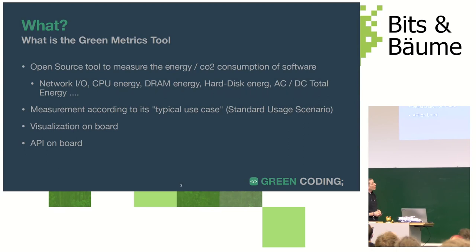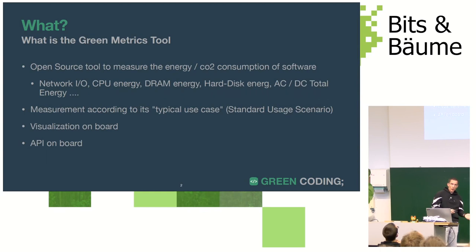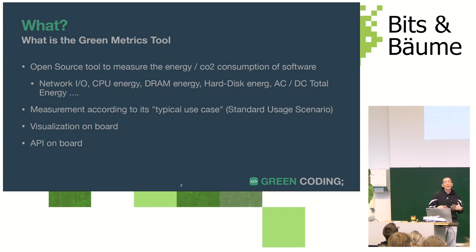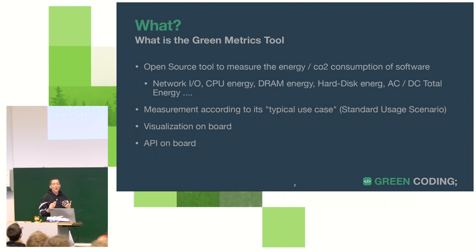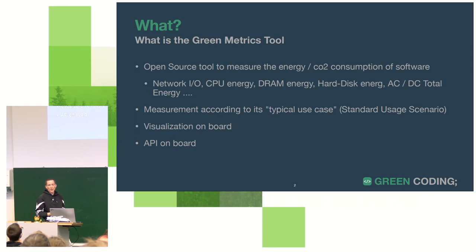So what is the Green Metrics Tool? It is an open source software tool able to measure the energy and CO2 consumption of software, whether you wrote it or somebody else did. It measures typical parameters developers know: network I/O, CPU energy, DRAM energy, hard disk energy, and AC/DC power — Gleichstrom and Wechselstrom — depending on where you take the signal of the electricity you want to measure.